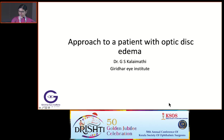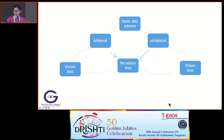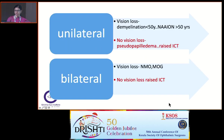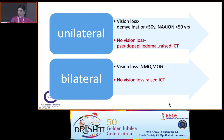Good afternoon, everybody. My topic is Approach to a Patient with Optic Disc Edema. Optic disc edema could be either unilateral or bilateral and with or without vision loss. Unilateral with vision loss could be due to demyelination if the age group is below 50, or non-arteritic AION if above 50. Without vision loss, it could be pseudopapilledema or asymmetrical raised ICP. Bilateral without vision loss could be due to increased ICP, and with vision loss it could be NMO or MOG type optic neuritis.